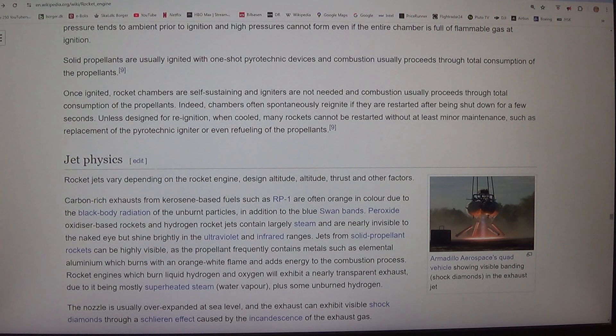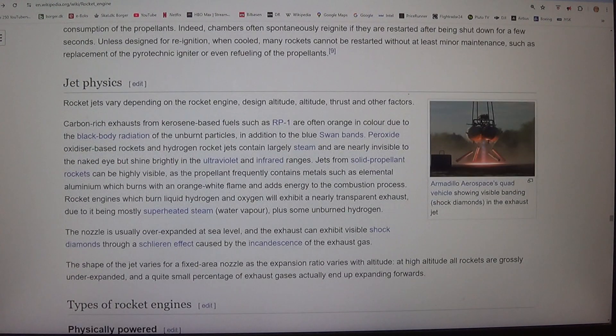Once ignited, rocket chambers are self-sustaining and igniters are not needed and combustion usually proceeds through total consumption of the propellants. Indeed, chambers often spontaneously reignite if they are restarted after being shut down for a few seconds. Unless designed for re-ignition, when cooled, many rockets cannot be restarted without at least minor maintenance, such as replacement of the pyrotechnic igniter or even refueling of the propellants.